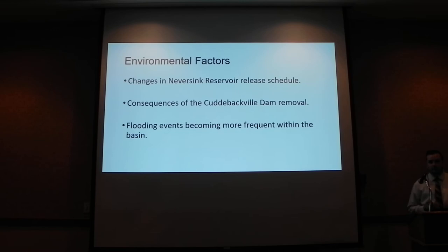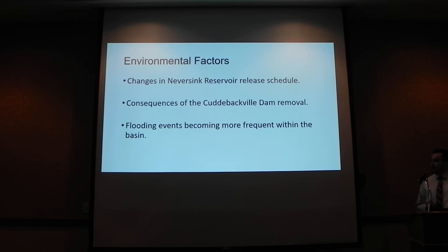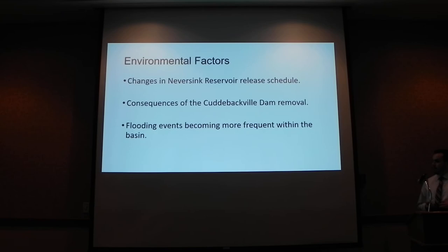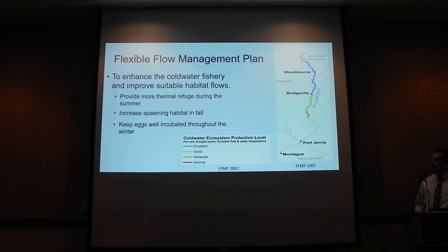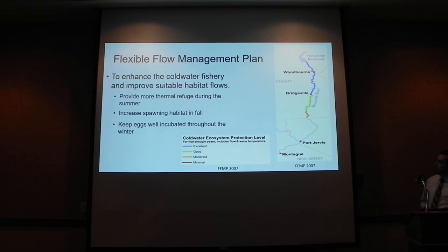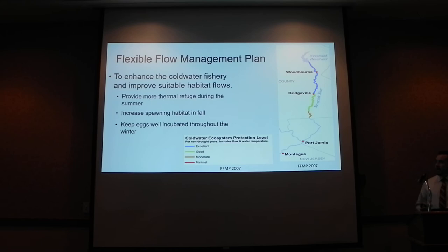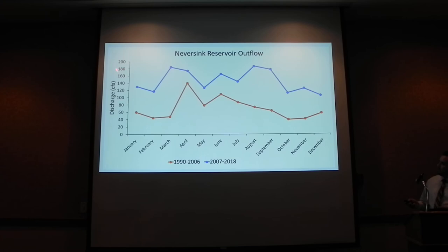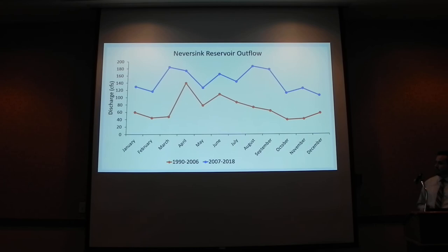We want to think about what environmental factors could be driving these changes. We looked at changes in the release schedule out of the Neversink Reservoir, how the dam removal may have affected mussels in that segment, and the frequency of severe storm events from climate change. In 2007, the Flexible Flow Management Plan was implemented by the decree parties of the Delaware River Alliance to improve the cold water fishery downstream, providing thermal refuge in summer, increased spawning habitat in fall, and keeping brown trout eggs incubated through winter.